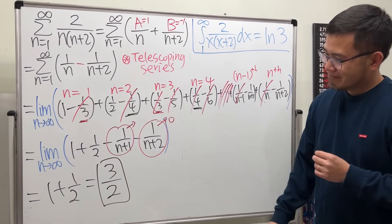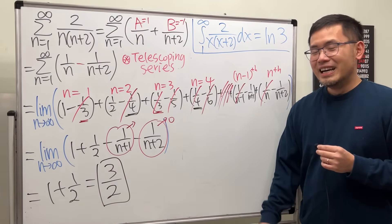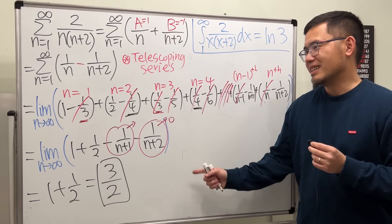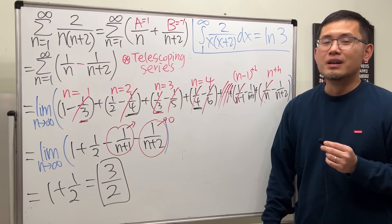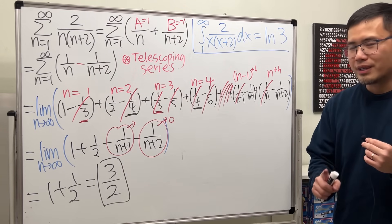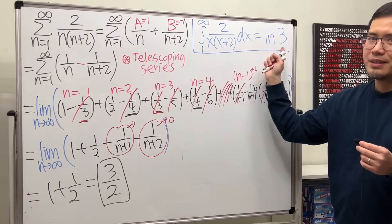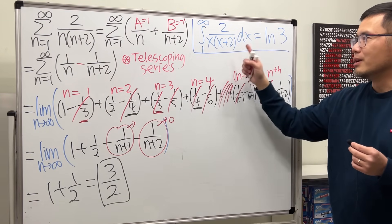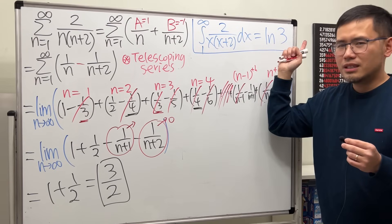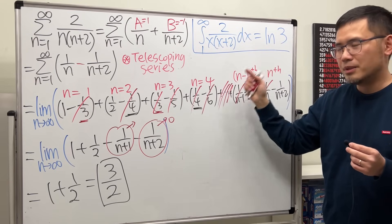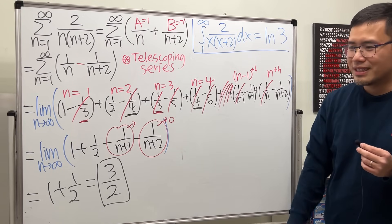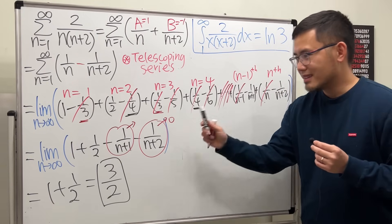Hopefully this helps. Don't forget to try the improper integral on your own and make sure you can show it equals ln3. If you need help, leave a comment below and I'll make another video. Anyway, that's it.